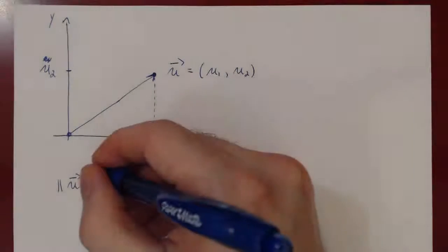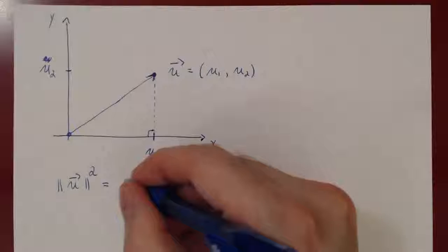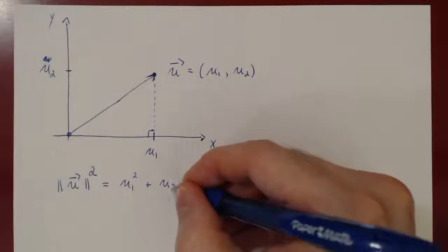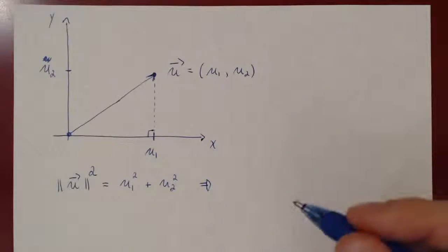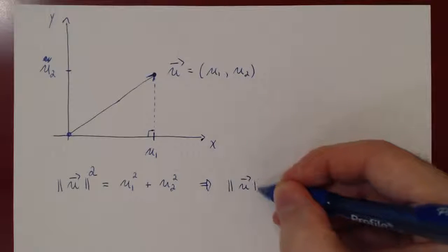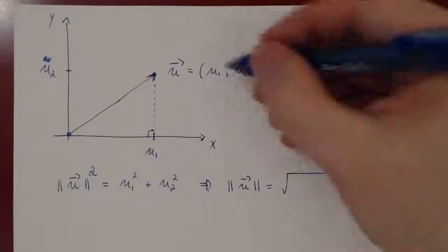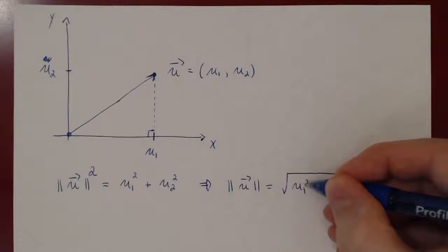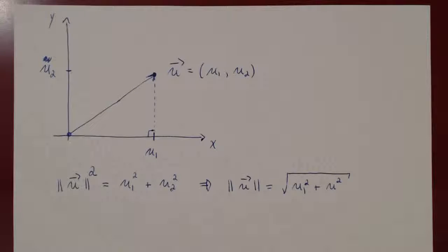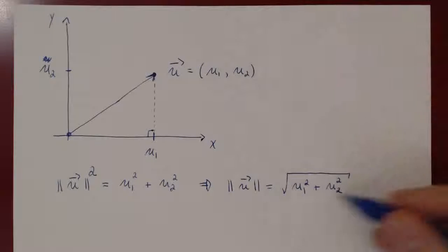The question is how do we compute the norm of u algebraically. Look at the picture. What we have naturally is a right triangle, where the length of the base is u1 and the height of the triangle is u2. So we can naturally use Pythagoras' theorem. The length of the vector u, the norm of u, is simply the hypotenuse of the triangle. The norm squared of u equals the base squared, u1 squared, plus the height squared, u2 squared. So the norm of u is the square root of u1 squared plus u2 squared.